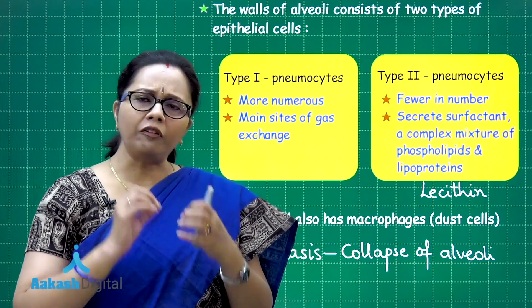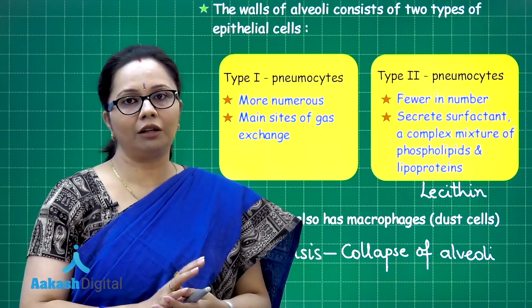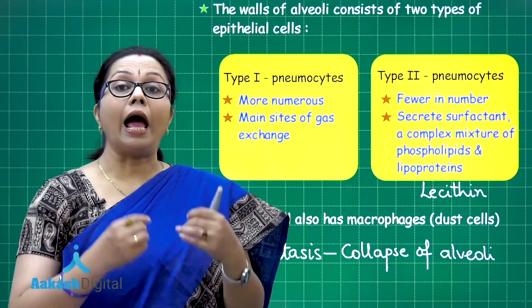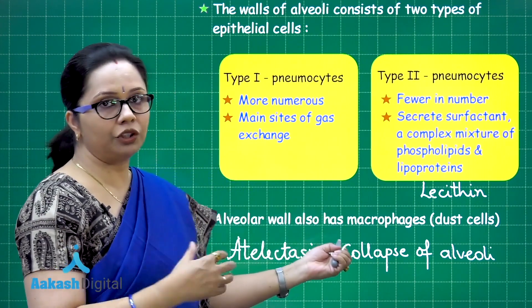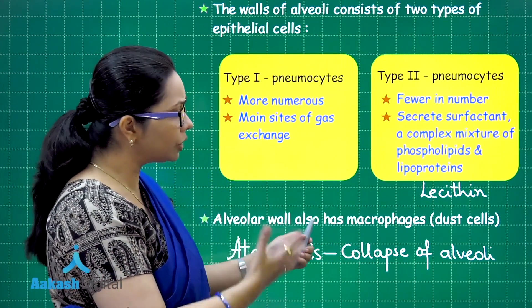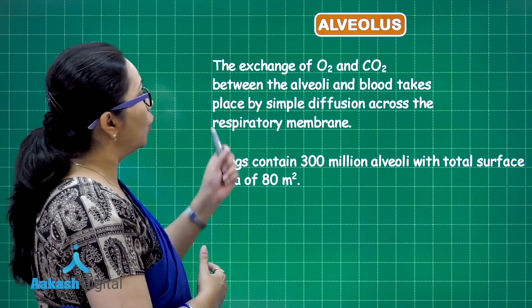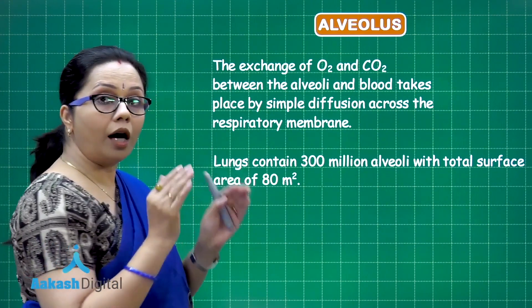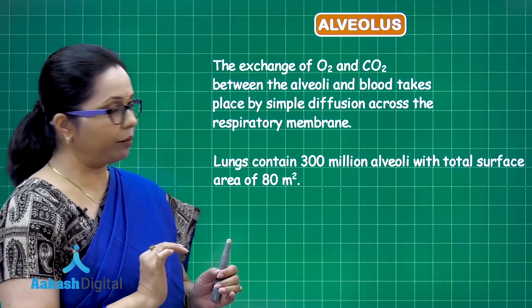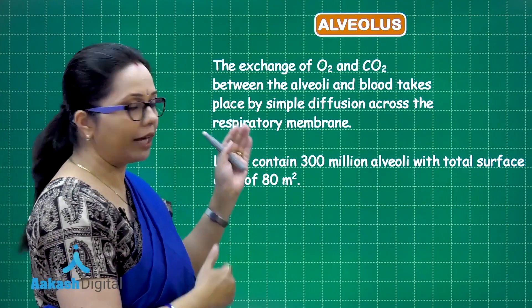However, very fine particles cannot be stopped even in the conducting zone and would reach the alveoli. There, macrophages finally trap them. The alveoli are the site where exchange takes place between the blood vessels and the alveolar lining, which together form the respiratory membrane.